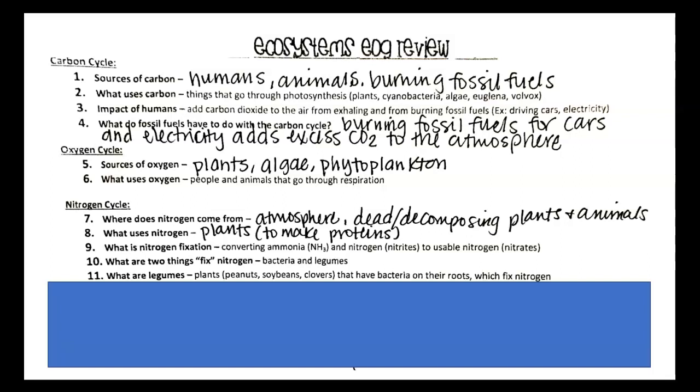Number 10, what are two things that fix nitrogen? Bacteria on the legumes do and then also lightning is the other example. So the bacteria that live symbiotically with the legumes and then the second thing that fixes nitrogen is lightning.